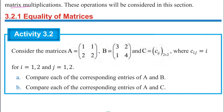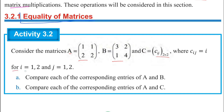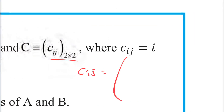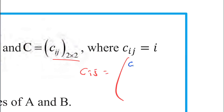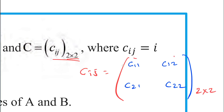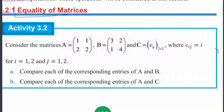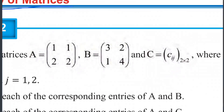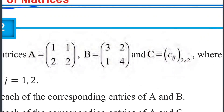Where CIJ is equal to I. Let J equal 1, 2. CIJ is equal to C11, C12, C21, C22 — a 2x2 matrix, where columns equal rows. Compare each of the corresponding entries of A and B.